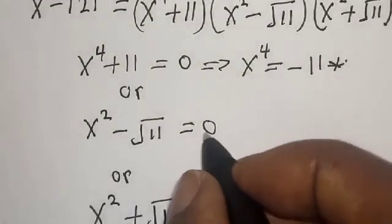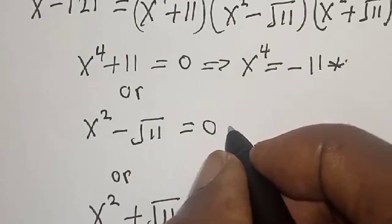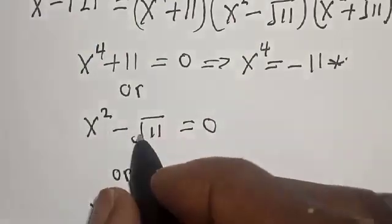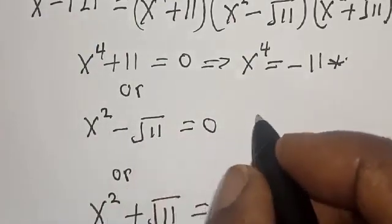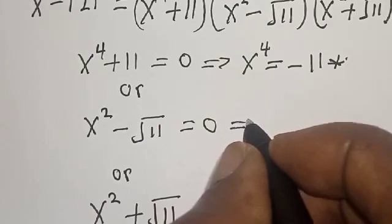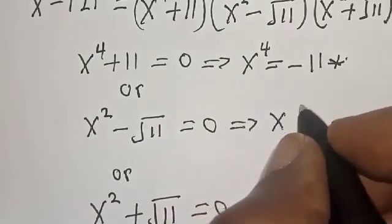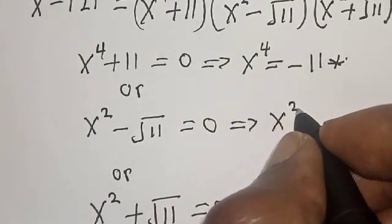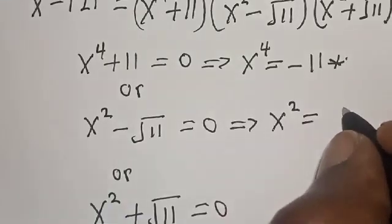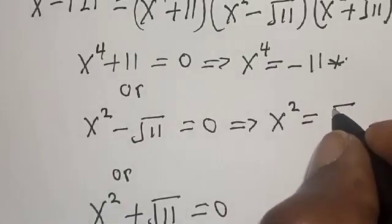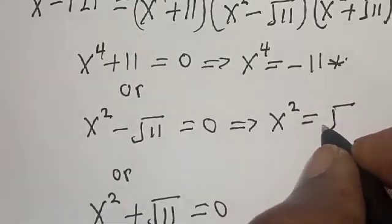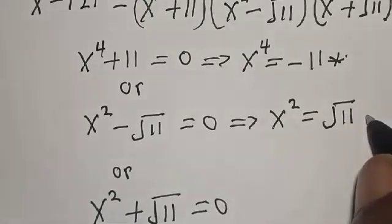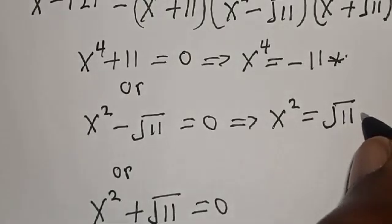From case two, x squared minus the square root of 11 equals zero. This implies that x squared is equal to the square root of 11. Since this is positive, we accept this.